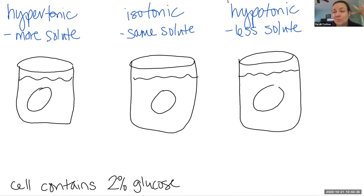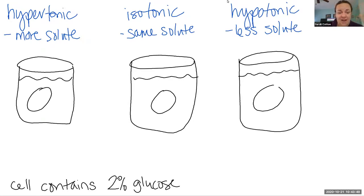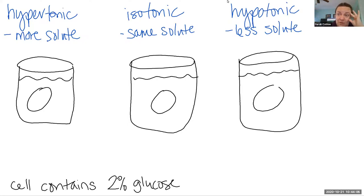Let me catch people up for those watching this video. We decided during Zoom today to talk about another example of osmosis. We've got our three beakers — each beaker is going to contain a different type of solution: one is hypertonic, one is isotonic, one is hypotonic. But the cell is going to be the same in all of them.